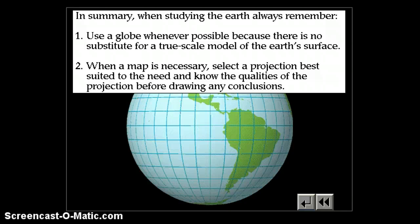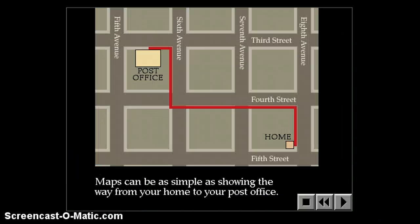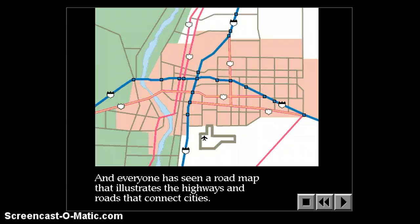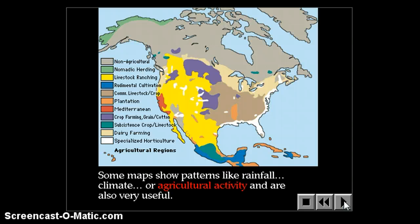Whenever you're looking at models of the Earth, remember that a globe is the most accurate because it is most similarly shaped like the planet. But it's often not at the right scale, so you need to use maps. When a map is necessary, select a projection that best suits your needs: if you're most concerned about shapes, use a conformal projection; if you're most concerned about areas, use an equal area projection. Maps can be as simple as showing your way from your house to the post office, or a roadmap that illustrates highways and roads connecting cities.